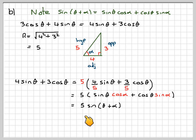This becomes 5 sine of theta plus alpha. Alpha will be tan to the minus 1 of 3 over 4, which equals 36.9 degrees. So this will become 5 sine of theta plus 36.9 degrees.